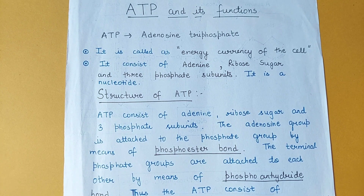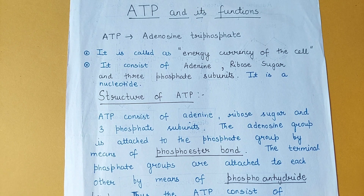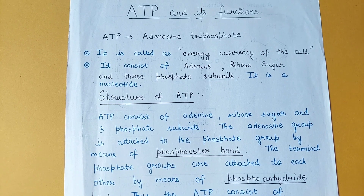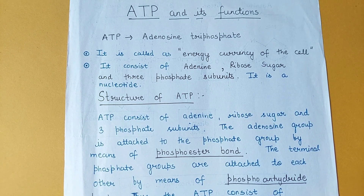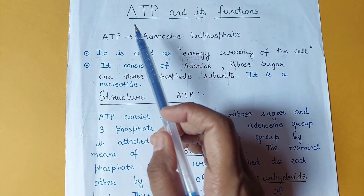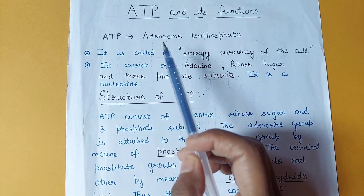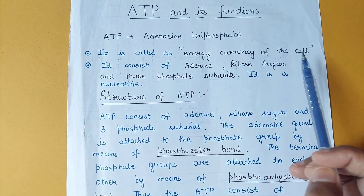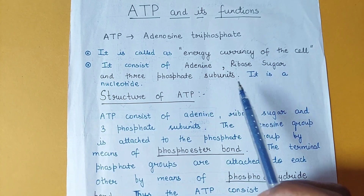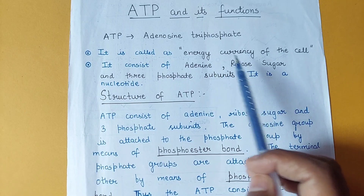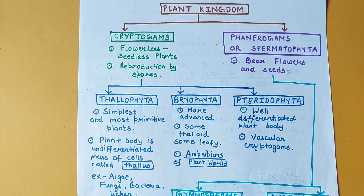This next sheet is about ATP and its functions. If you have to write a short note on it, you can present it this way. If you don't want to use color pens, you can use only black or blue pen and still make your answers effective. You should have knowledge of important keywords for the topic — for ATP, that includes its full form, the fact that it is called the energy currency of the cell, and that it consists of adenine, ribose sugar, and three phosphate subunits. Highlight all key terms even when using a black pen.